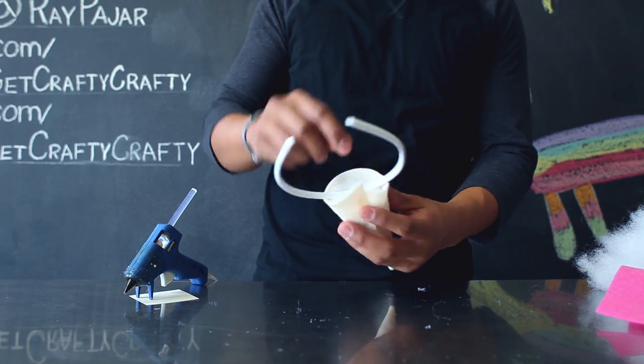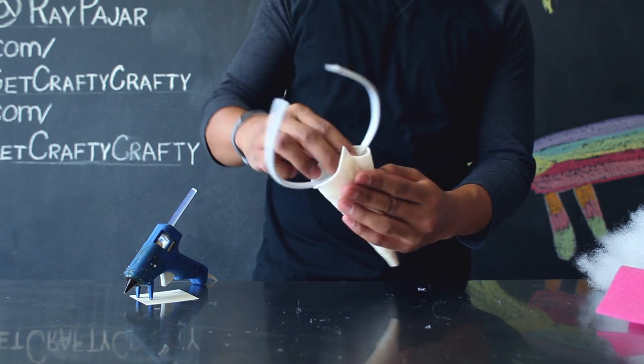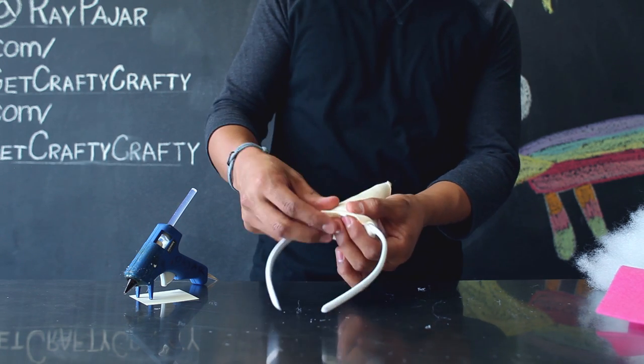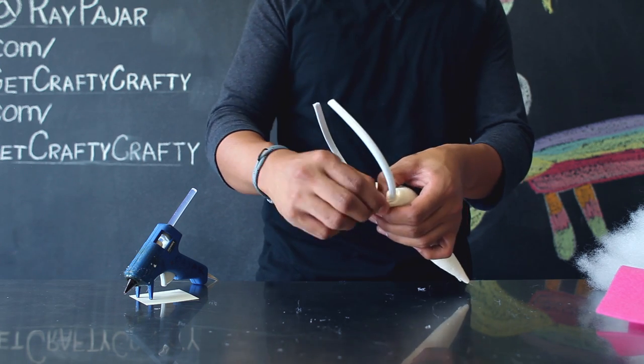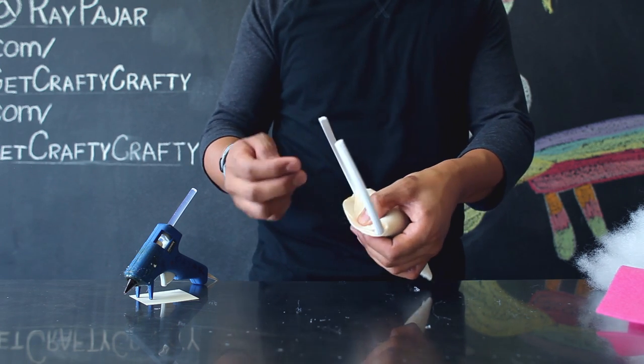Seal your horn by taking your triangle part and folding it in toward the end of your horn and then glue these pieces together so that you have none of the pillow stuffing escaping from your horn.